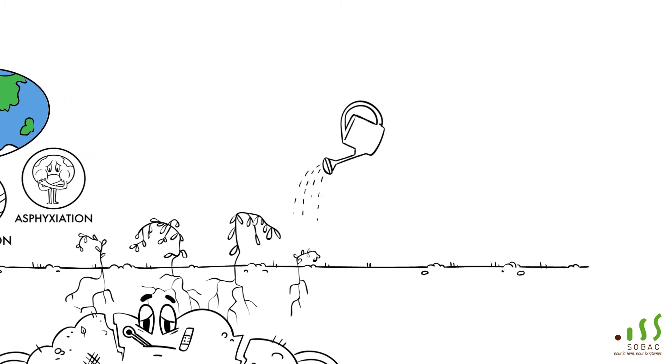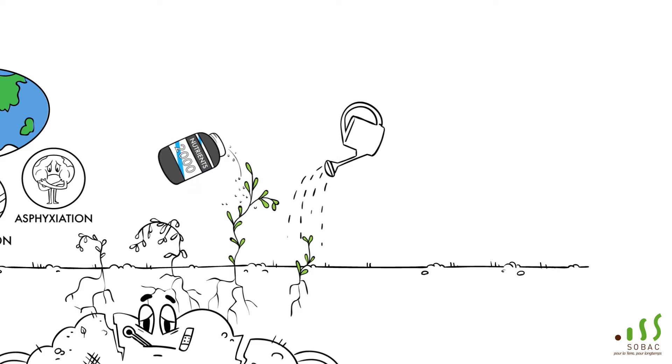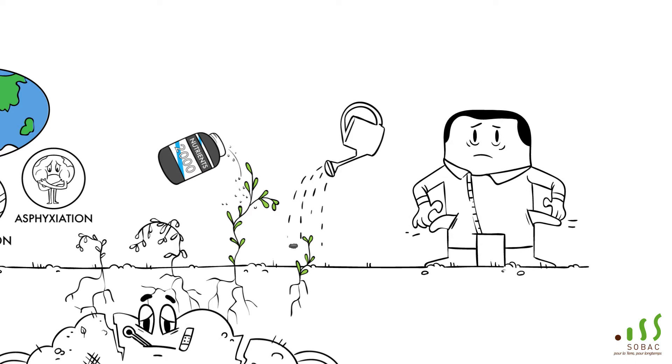More water and nutrients need to be added to allow the growth of the plant, resulting in significant costs and disastrous consequences for the environment, especially for air and water.